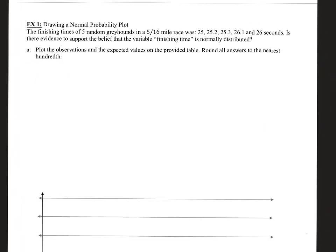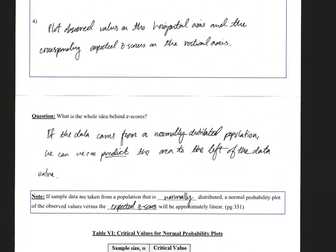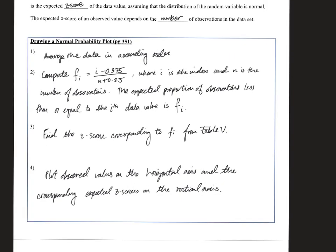Now let's look at the example for this section: Drawing a Normal Probability Plot. The finishing times of five random greyhounds in a 5/16th mile race were 25, 25.2, 25.3, 26.1, and 26 seconds. Is there evidence to support the belief that the variable finishing time is normally distributed? We'll plot the observations and expected values in a table, rounding all answers to the nearest hundredth.